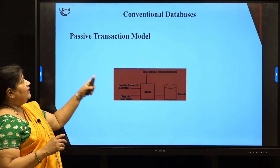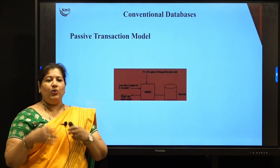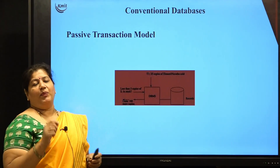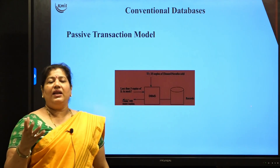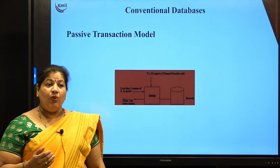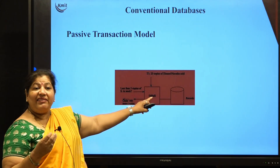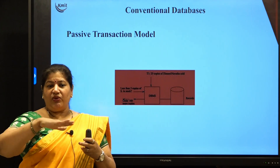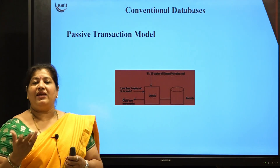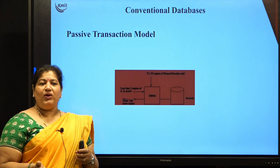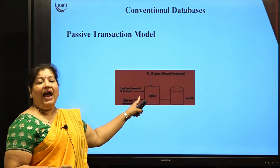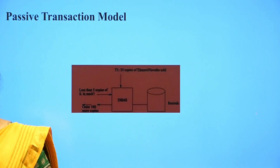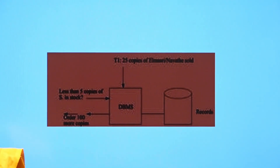Let us try to see a passive transaction model. Assume that you have an online bookseller, wherein a particular DBMS textbook has been sold nearly 25 to 50 copies on a particular day. It has so happened that there are less than 5 copies available. Don't you think that a retailer would always restock it before a certain threshold level is reached, so that whenever there is a demand request you should be able to fulfill it? That means somebody should keep checking this, and whenever the reorder level is reached — say when the number of books are below 5 — you immediately need to order 100 more copies.